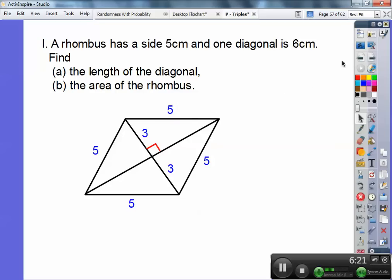And look, there's 3 and there's 5. So it's a 3, 4, 5 right triangle. So if that side's 4, that side's 4 because the diagonals are bisecting each other. So the whole other diagonal is 4 and 4 or 8.